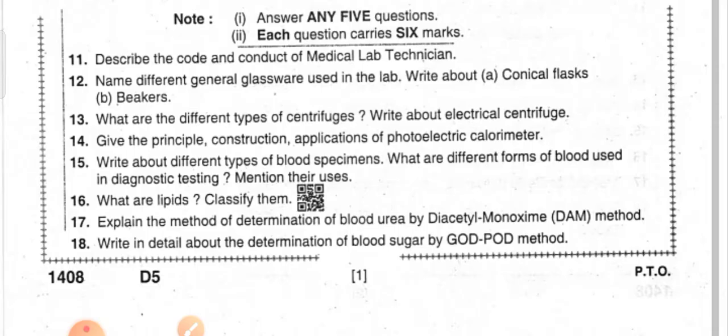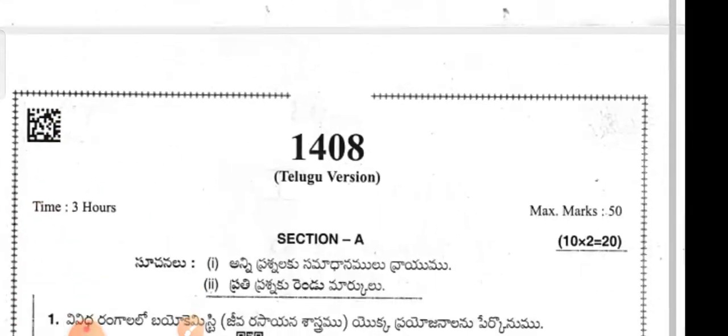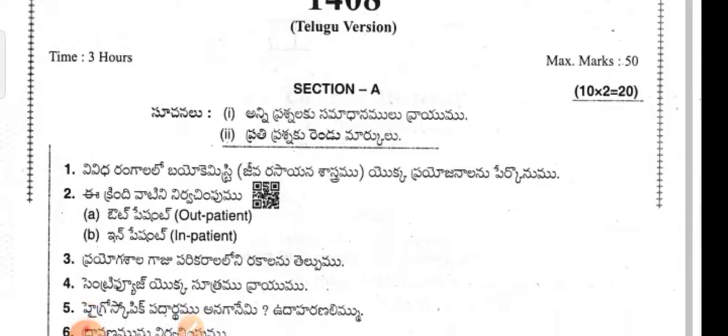Write about different types of blood specimens. What are the different forms of blood used in diagnostic testing — mention their uses. What are lipids? Classify them. Explain the methods of determination of blood urea by the diacetyl monoxime method. Write in detail about the determination of blood sugar by the GOD-POD method.